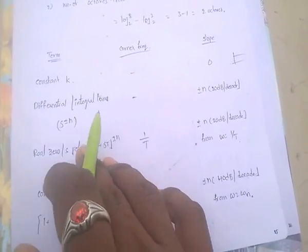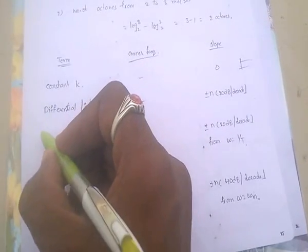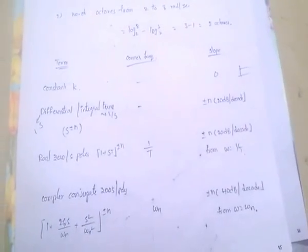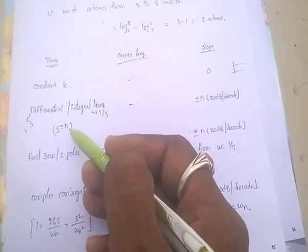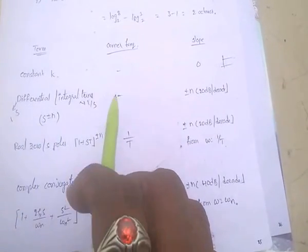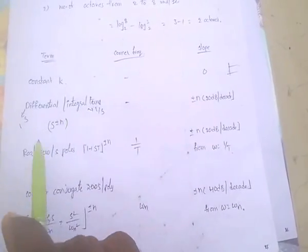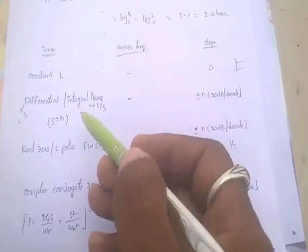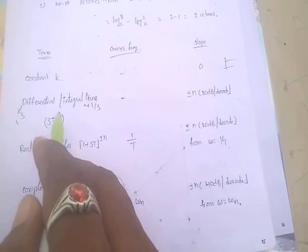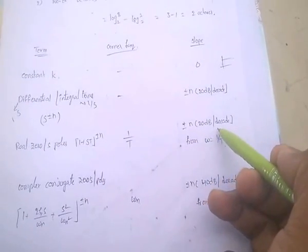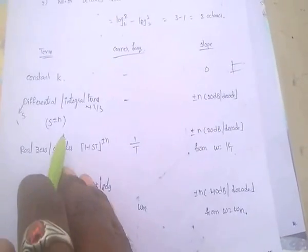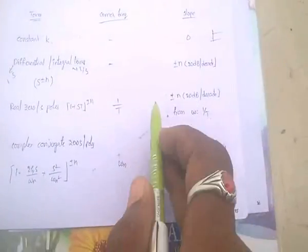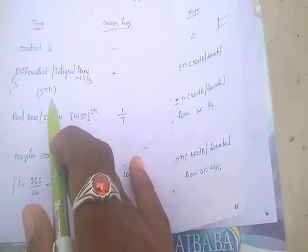Coming to the differential or integral terms, represented as s to the power of plus or minus n. s to the power of plus n is a differential term; s to the power of minus n, i.e., 1/s, is an integral term. For these terms, there is no corner frequency, and the slope is plus or minus n into 20 dB per decade. For s power 1, slope is 20 dB per decade; for s power 2, slope is 2 into 20 dB per decade, that is 40 dB per decade.